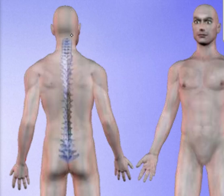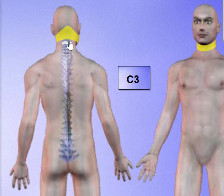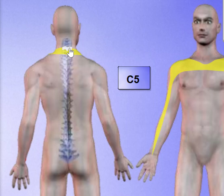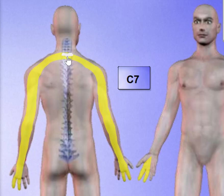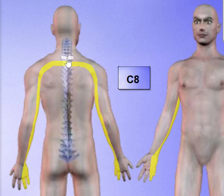Problems in the top part of the neck will cause problems in the head and upper neck. And as we move down, we start to see more problems in the shoulder, arms, and even hands and fingers. It's important to diagnose exactly where the problem is coming from so you can get the most effective care.